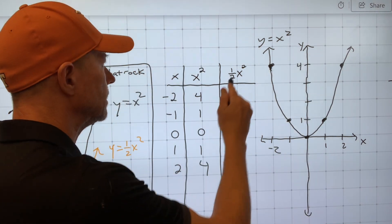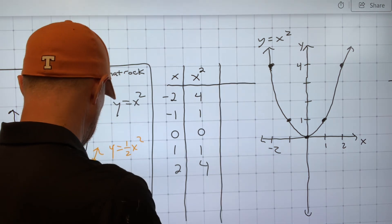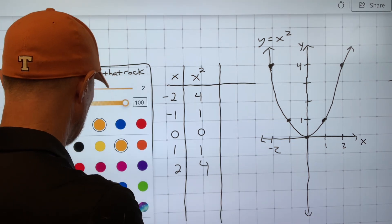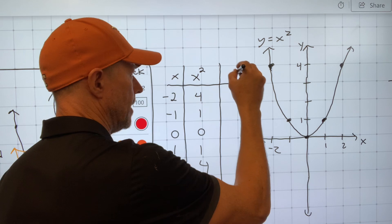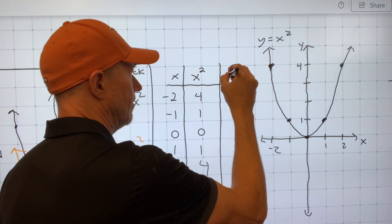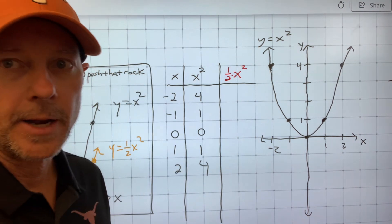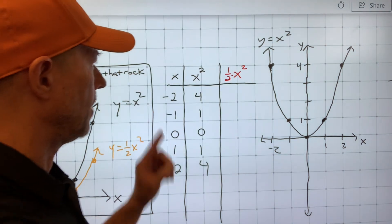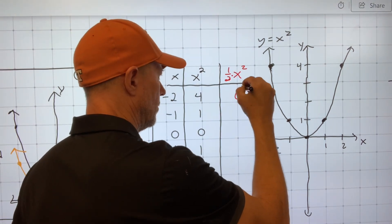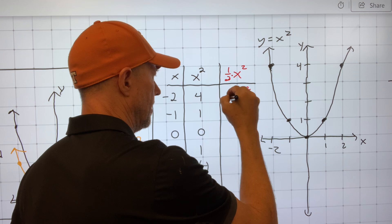But what happens if I multiply this graph by, I mean, x squared by 1 half? What happens if I do that? Well, I put the negative 2 in, just like before, and square it, and then I multiply by half.